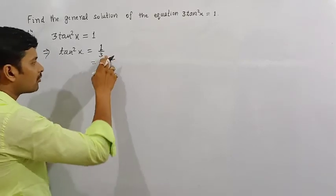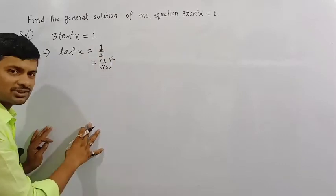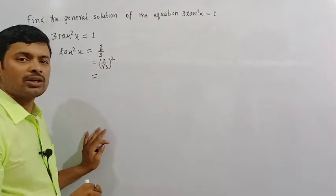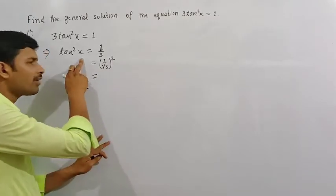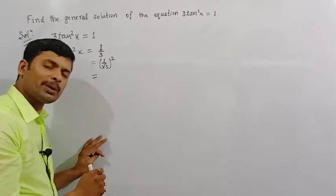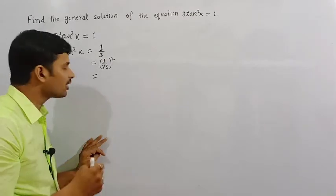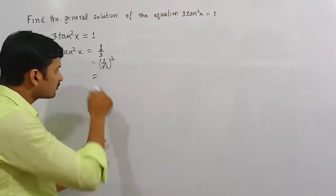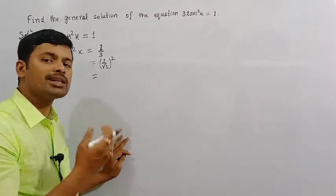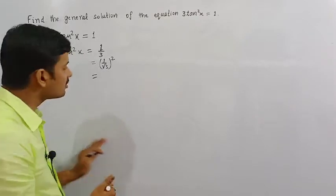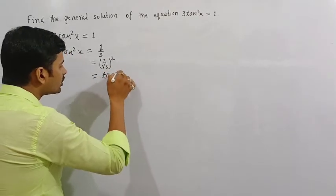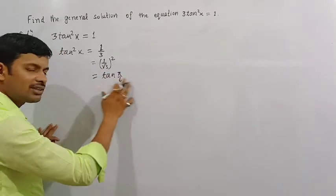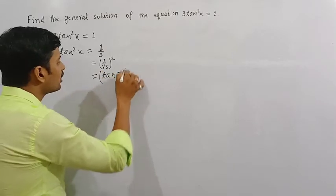The square of 1 by root 3 gives us 1 by 3. Now think about the value 1 by root 3 — for what angular value of tangent does it give 1 by root 3? That is tan 30 degrees. So for the angle 30 degrees, the tangent value is 1 by root 3. 30 degrees is written as pi by 6 radian. So we can write 1 by root 3 as tan pi by 6, and we have its square.